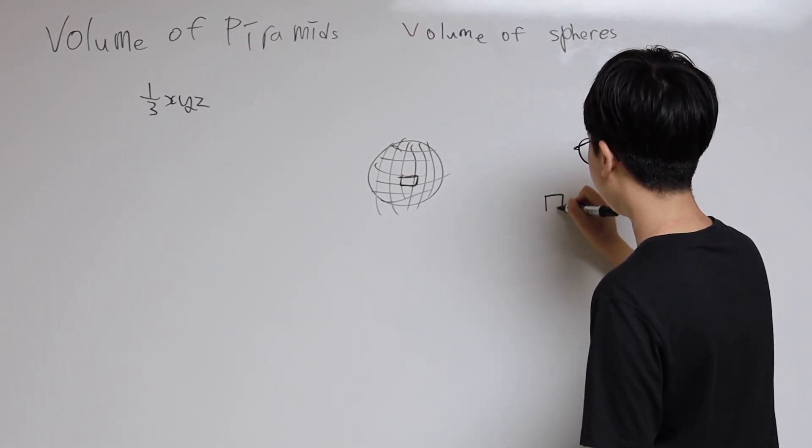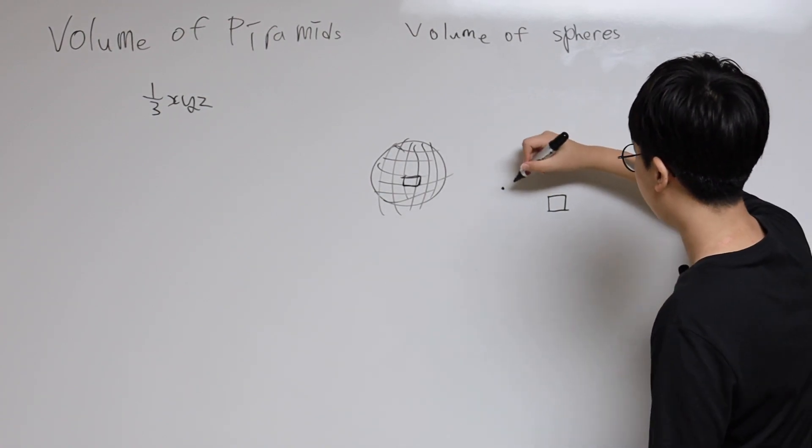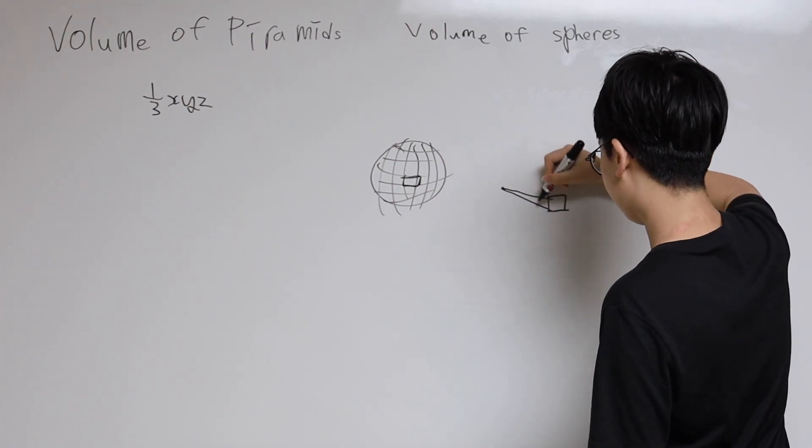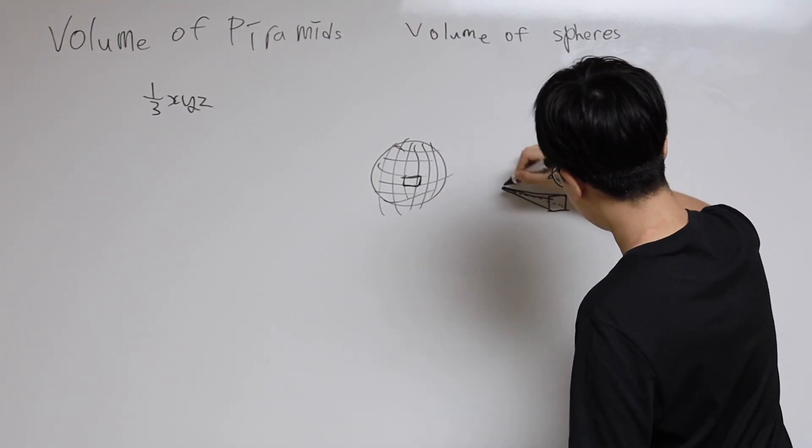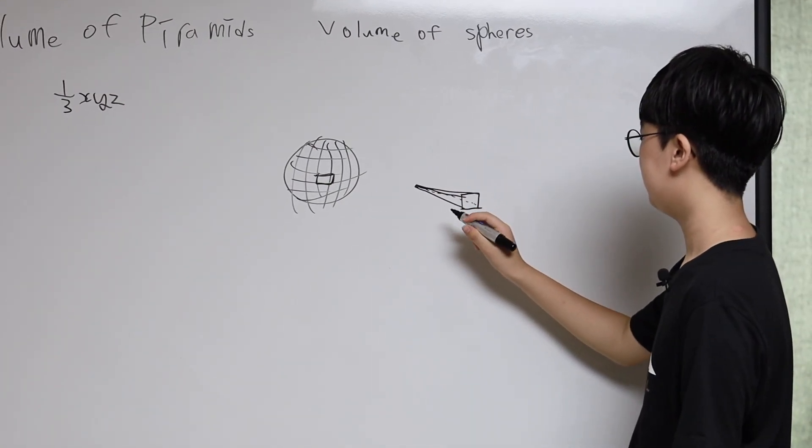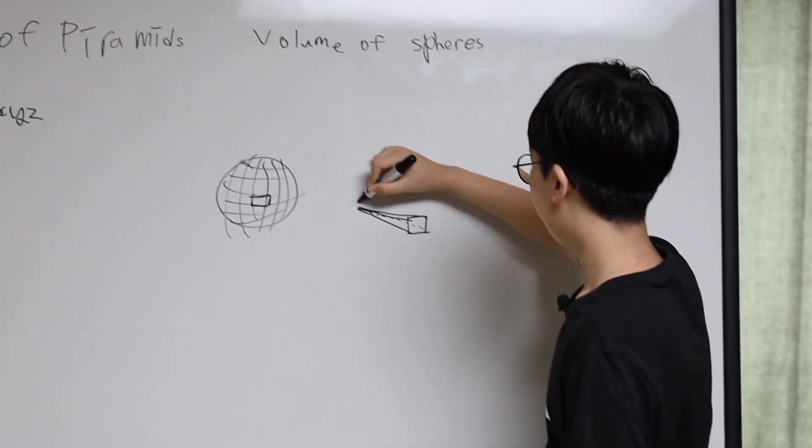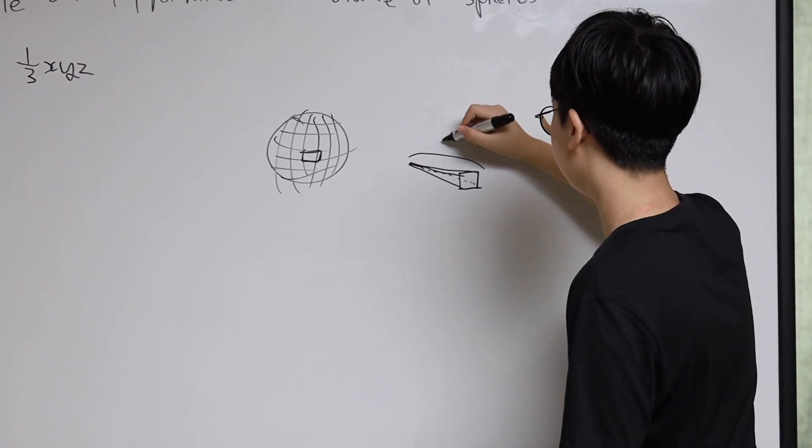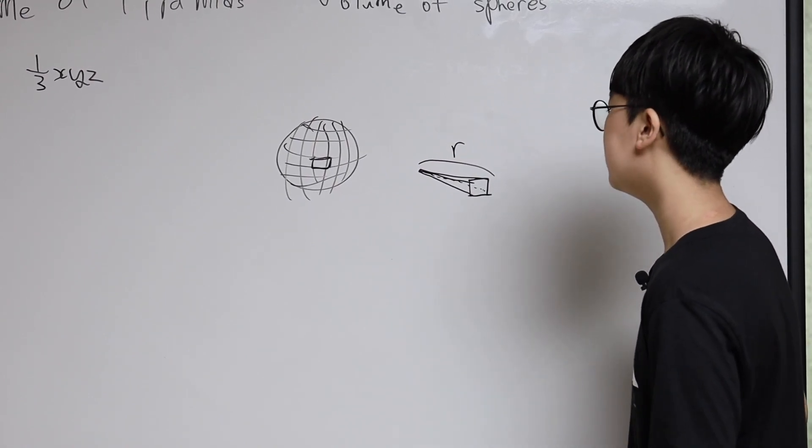The pyramid of that would be: here's the square, here is the center of the sphere, and the pyramid would be something like that, and the height of it would be the radius of the sphere.